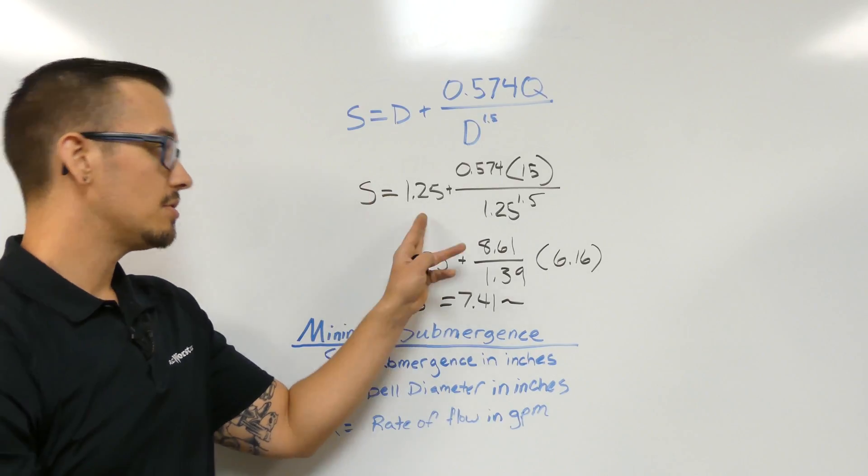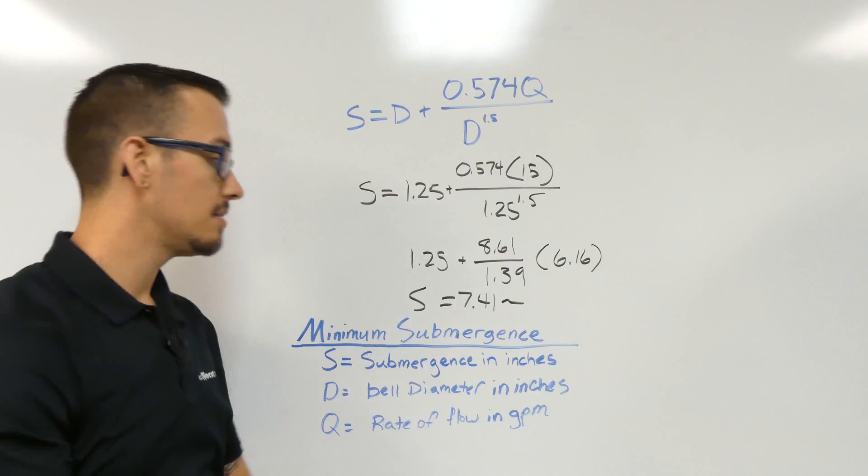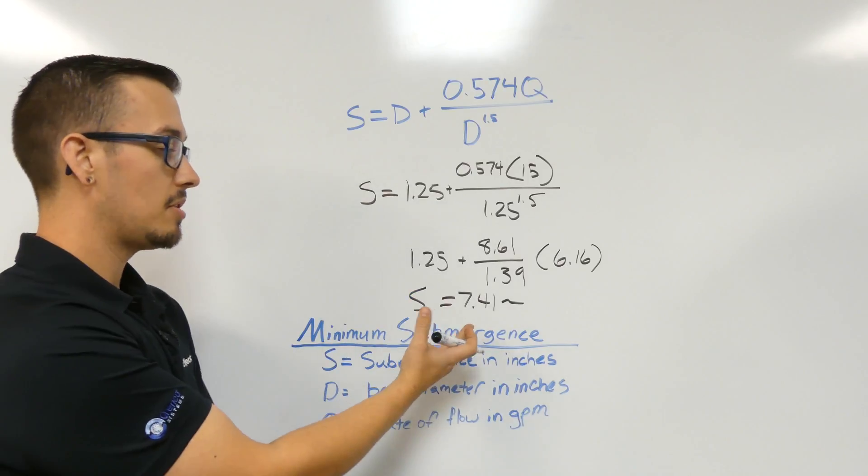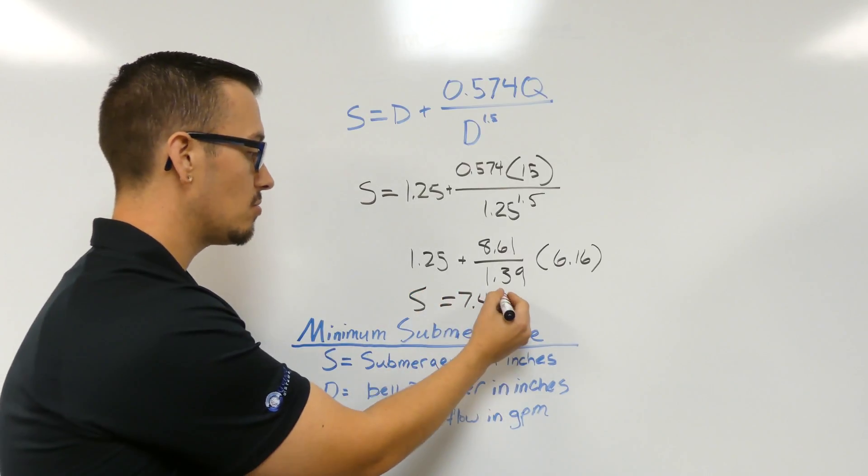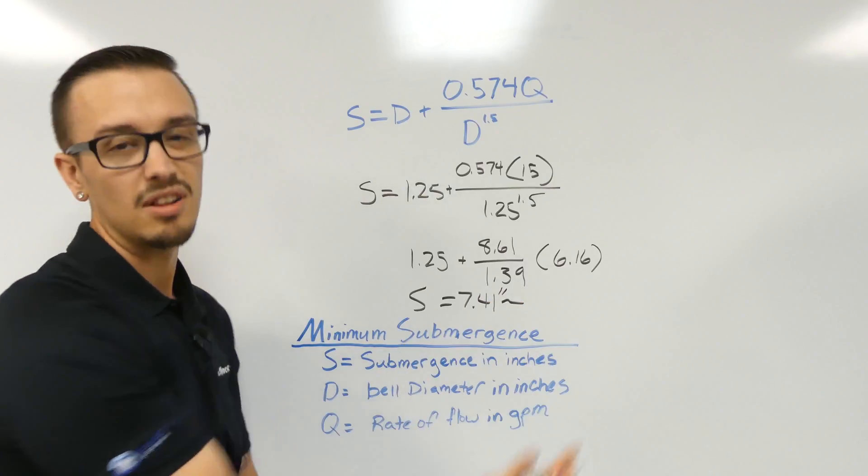So in this example, using inch and a quarter pipe and 15 gallons a minute, we're able to determine that our minimum submergence needs to be roughly, we'll call it seven and a half inches.